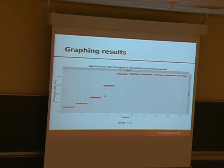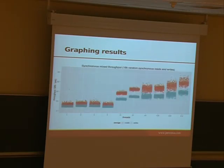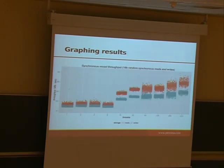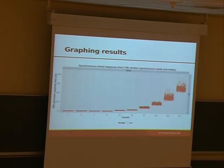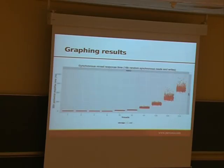Similarly for reads — if I use more threads, the read throughput will increase, but again the response time will just go up after a while. My read performance in isolation was pretty good, but if I do a mixed reads benchmark, I won't be able to do 400 megs for reads anymore, and the response time is similar. After a while the throughput doesn't grow, but the response time starts to grow exponentially.